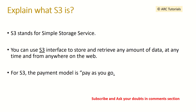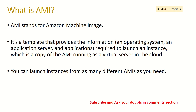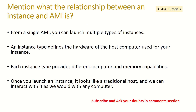What is AMI? AMI stands for Amazon Machine Image. It is a template that provides the information required to launch an instance, which is a copy of the AMI running as a virtual server in the cloud. You can launch instances from as many different AMIs as you need, and you can configure any number of AMIs that you want.